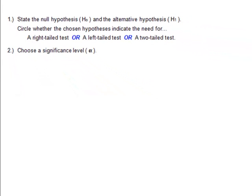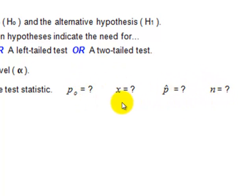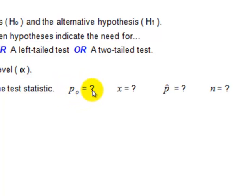Number three, we calculate the value of the test statistic. This is going to come from these four numbers. N is our sample size. X is the number of items in the sample with the certain characteristic. P hat is our sample proportion which is X divided by N and this is P null. This is our assumption of what the population parameter P equals.